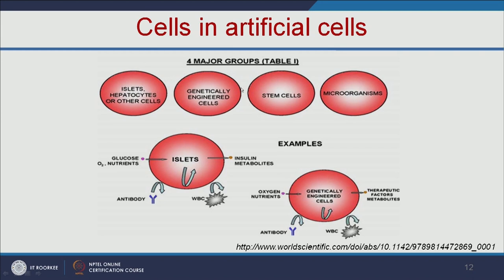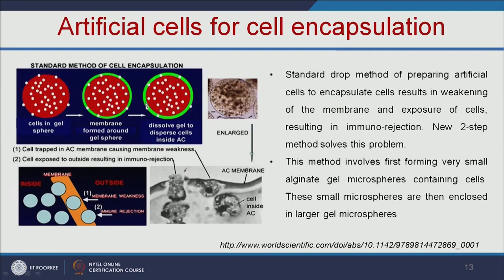We can also encapsulate genetically engineered cells, stem cells, and even microorganisms. For example, encapsulated islet cells will produce insulin depending on glucose level. Genetically engineered cells can produce various therapeutic factors useful for various therapeutic applications.